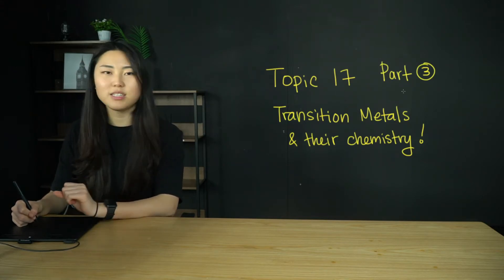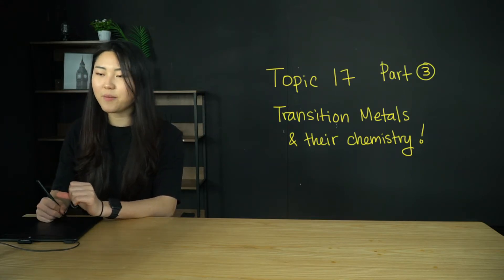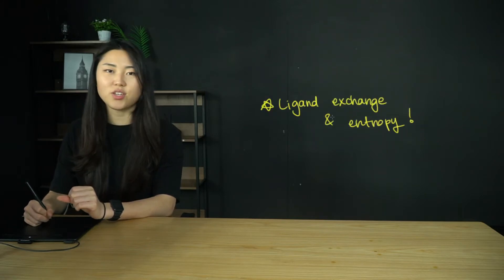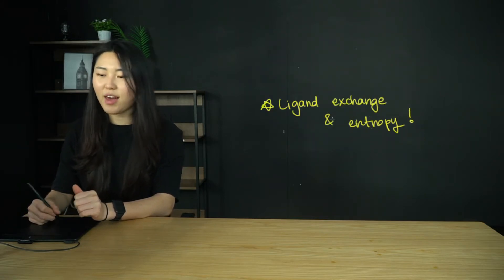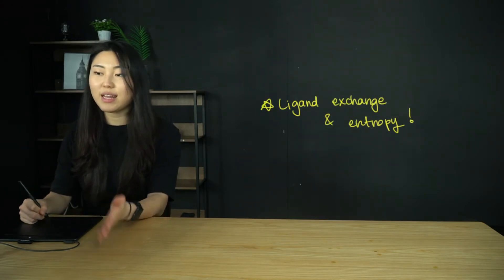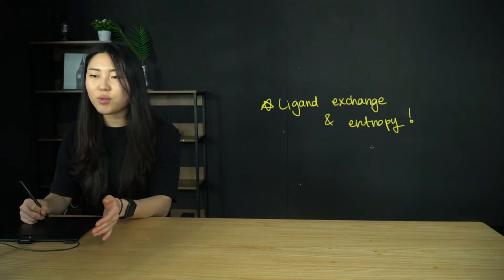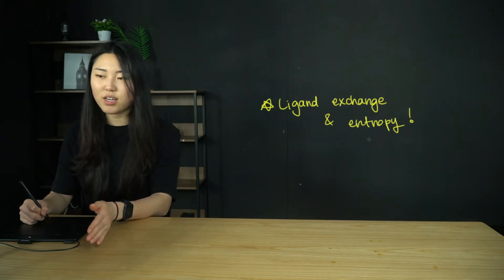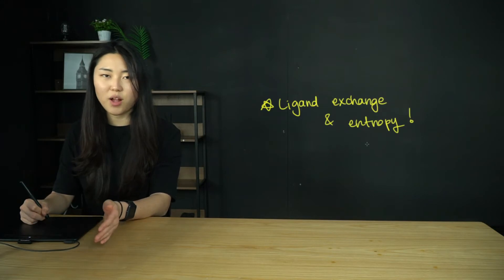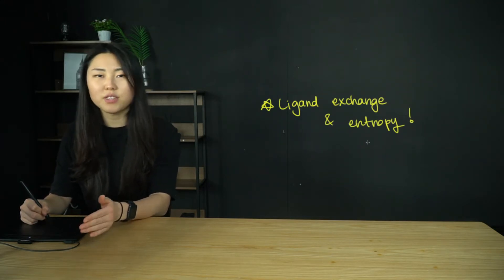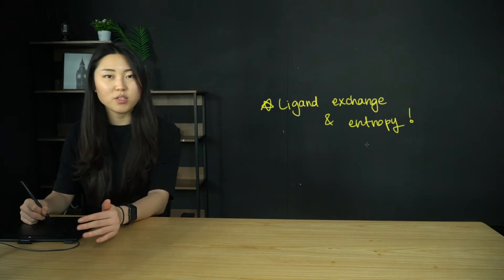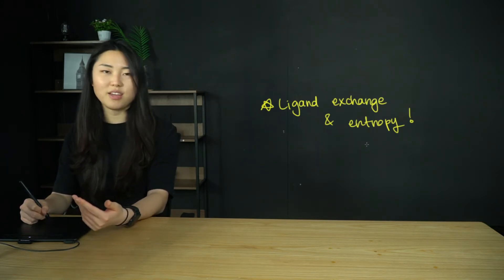In this part three, I will be discussing ligand exchange and entropy. When ligand exchange occurs, not only does it accompany color change, it can accompany entropy change as well. The resulting complex ions could have different entropy values, so they could be more stable or less stable than other complex ions.